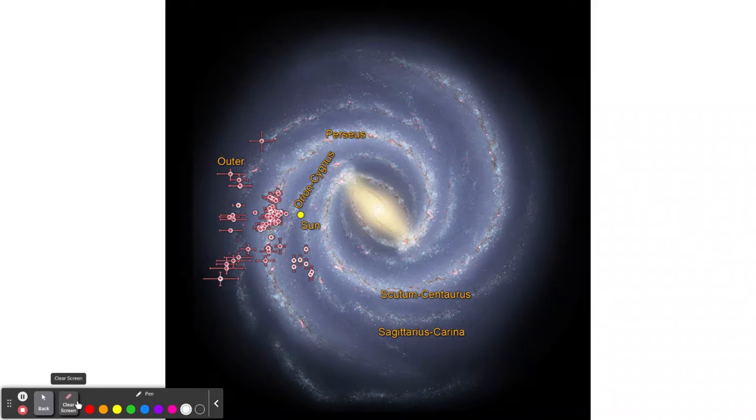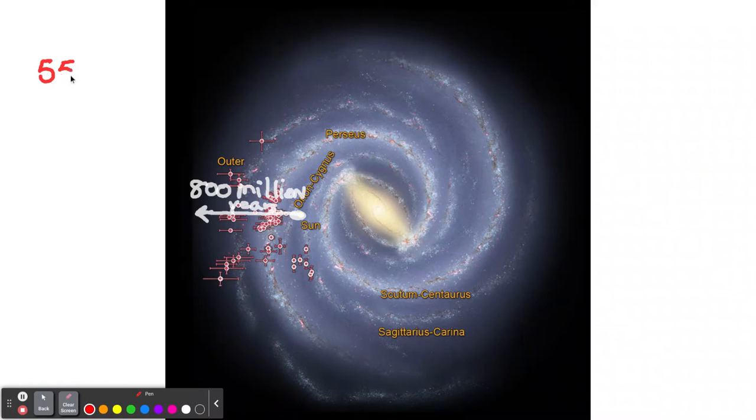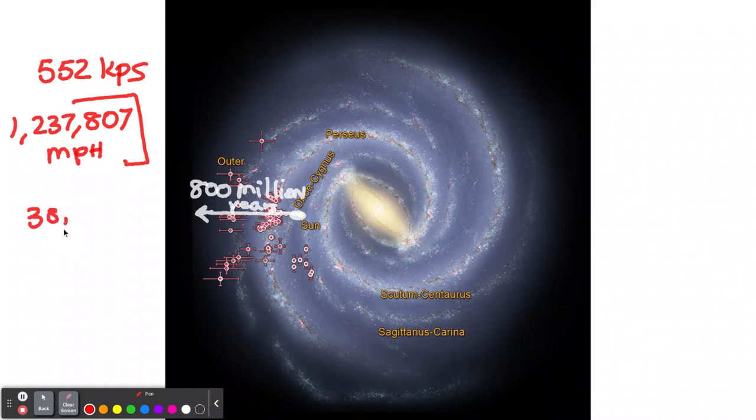We'll go back to this. Make sure we have our pen going. So like we said before, here we are, and let's just say it's heading to the edge, 800 million years just to get to the edge. But once it gets to that edge, it needs an enormous amount of speed just to escape. And what it would need, it would have to go about 552 kilometers per second. And that's 1,237,807 miles per hour.